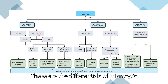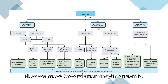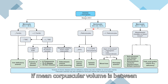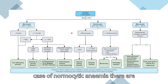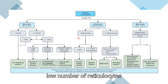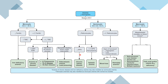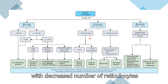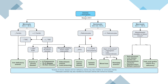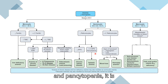These are the differentials of microcytic anemia. Now we move towards normocytic anemia. If MCV is between 80 to 100 femtolitres, it is normocytic anemia. In normocytic anemia with a low number of reticulocytes along with decreased erythropoietin, the diagnosis is chronic kidney disease.